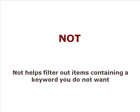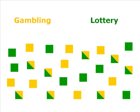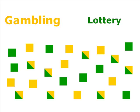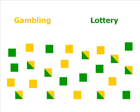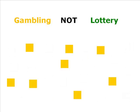Finally, let's look at the NOT Boolean operator. NOT helps filter out items containing a keyword you do not want. For our final example, the yellow blocks are items discussing only gambling and the green blocks are items discussing only lotteries. The two-tone blocks are items discussing both. If you are researching gambling problems but not as they relate to lotteries, placing the NOT operator between the two will return items containing the word gambling, but any items with the word lottery will be filtered out. So in this case, our results would be only the yellow blocks.